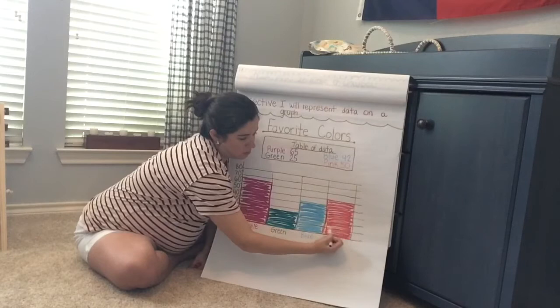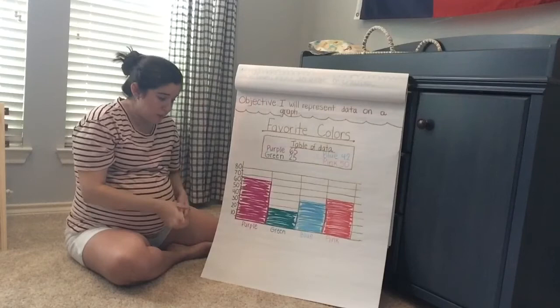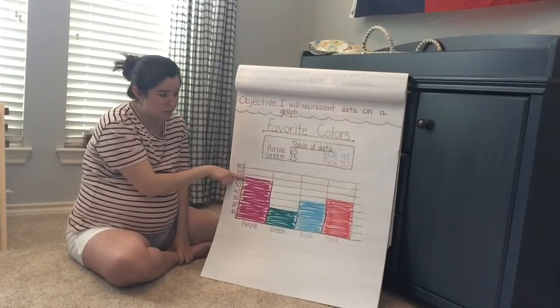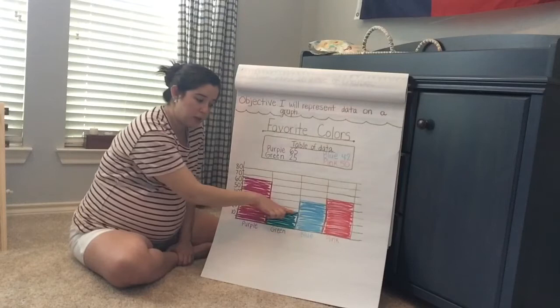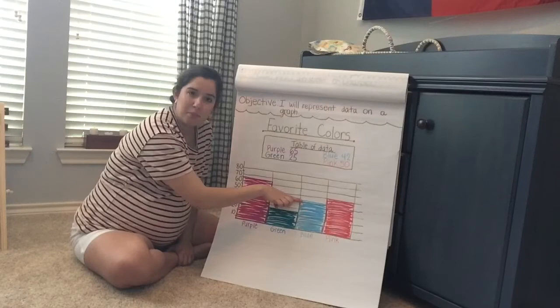And there it is. I can always double-check my work. Purple had 65: go to 60, and then halfway to 70 is 65. Green had 25: up to 10, 20, and right in between 20 and 30 is 25. Blue had 42: go 10, 20, 30, 40, and then a tiny bit more. And pink was 50: 10, 20, 30, 40, 50.